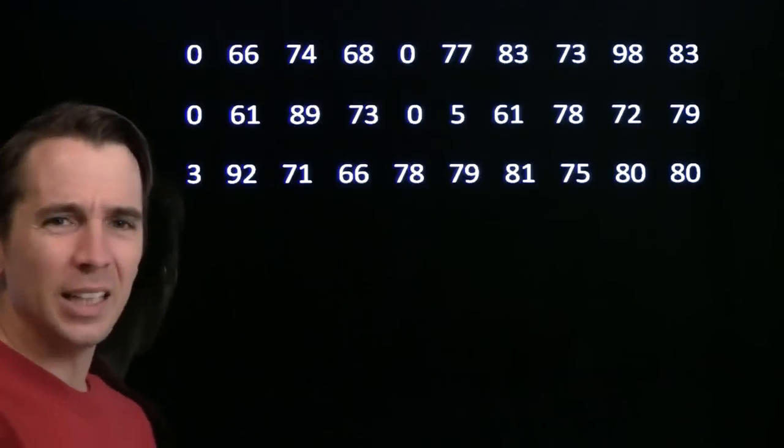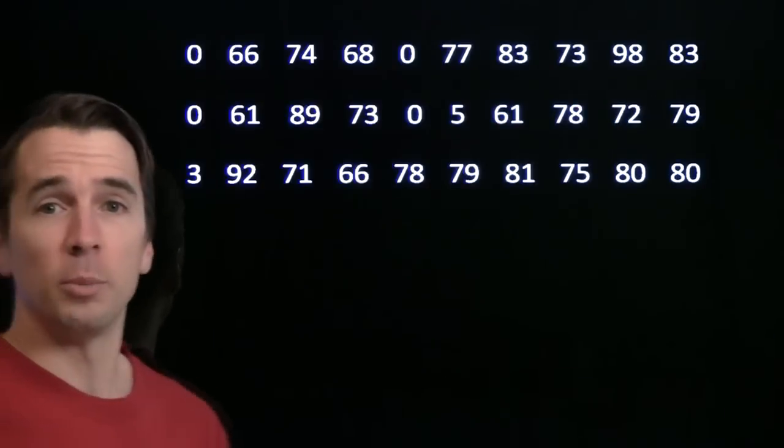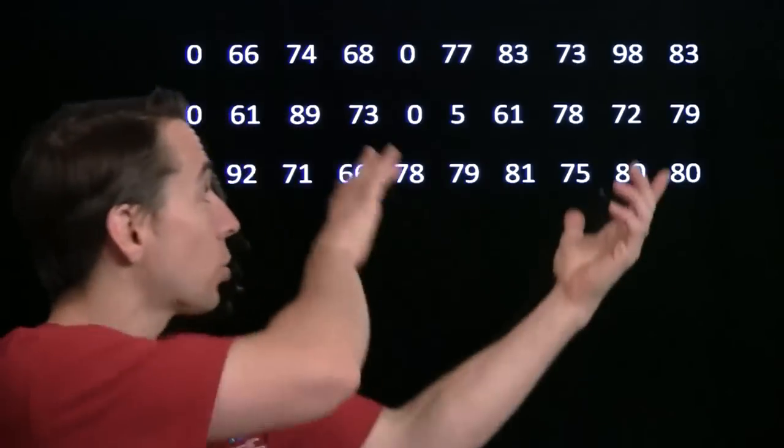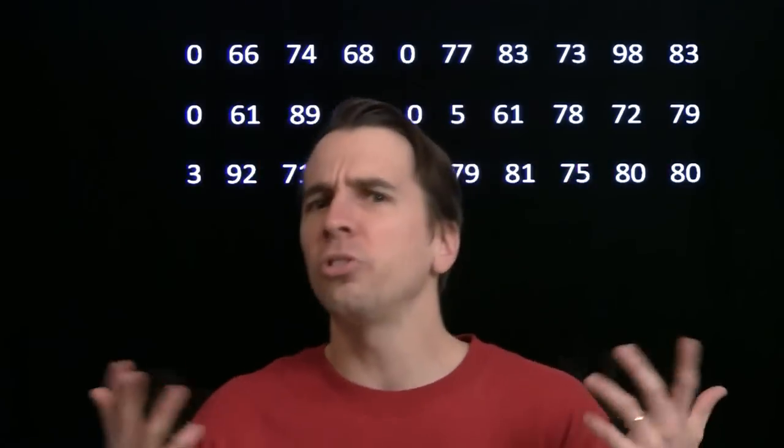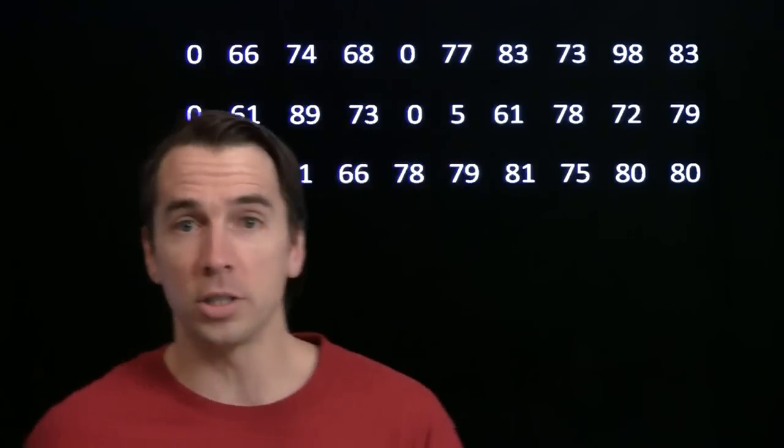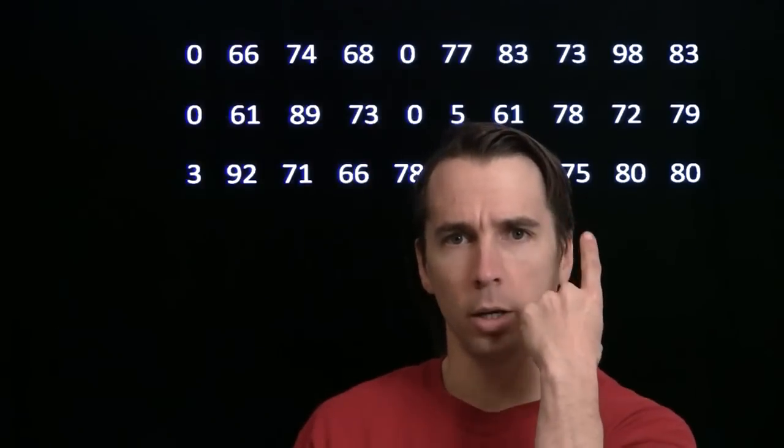Now, of course, to see how fast I am, you don't want to have to think about all these numbers. What you want to think about is just one number. You want a statistic. Statistics give us a way to describe a whole bunch of numbers with just a few numbers. In this case, we're going to talk about ways to describe all these numbers with just one number.